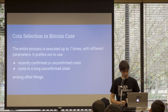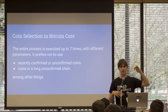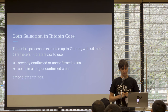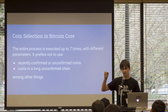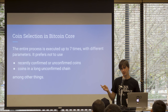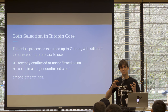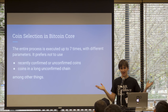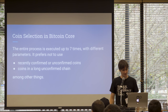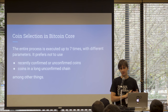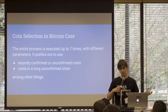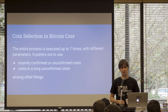This entire process — the coin selection and subset approximation — is done up to seven times. Each time, the parameters are slightly different. If you look at the source code, you'll see about seven lines calling the SelectCoinsMinConf method. Each time the parameters become less strict: the first time it's really strict, and then it gradually loosens up until at the very end it's just 'give me any coins I have that would fulfill this, and I don't care if they're unconfirmed.' So it tries not to use recently confirmed or unconfirmed coins first — it tries to use coins that are secure and won't risk a reorg or something. Then it tries to not use coins in a long unconfirmed chain, and other things. You can check the code if you're interested in exactly what it's doing.